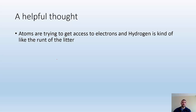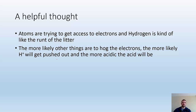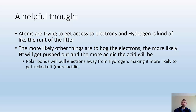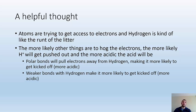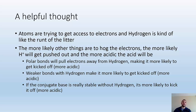Atoms are trying to get access to electrons, and hydrogen is kind of like the runt of the litter — I think of them like little pigs and hydrogen is the runt. The more likely other things are to hog the electrons, the more likely H+ is going to get pushed out and the more acidic it will be. Polar bonds will pull electrons away from hydrogen, making it more likely to get kicked off and more acidic. Weaker bonds with hydrogen will also make it more likely to get kicked off. And if the conjugate base is really stable without hydrogen, it's more likely to kick it off, making it more acidic.